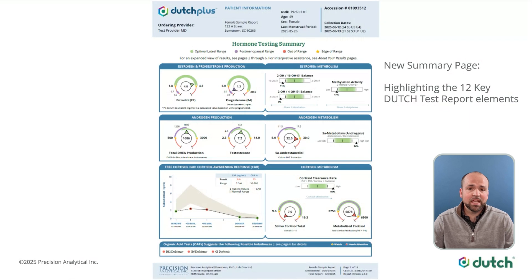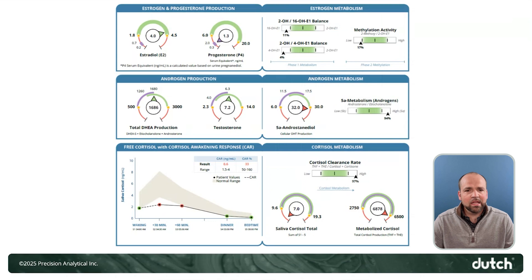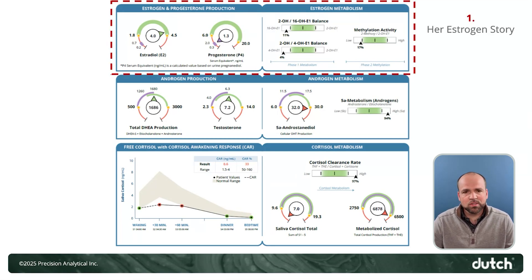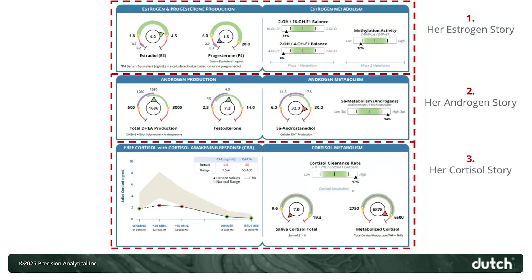The key feature of this update is an updated hormone testing summary page. Page one of the report, as you can see here, really highlights the 12 key elements of the Dutch test. What we've always been trying to do with the Dutch test is basically tell three hormone stories for your patient: the estrogen story, the androgen story, and the cortisol story.